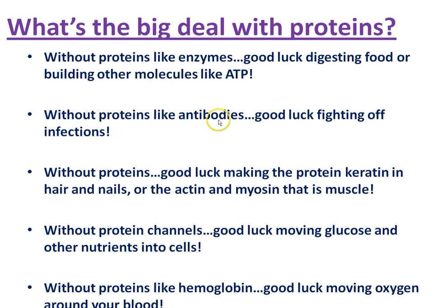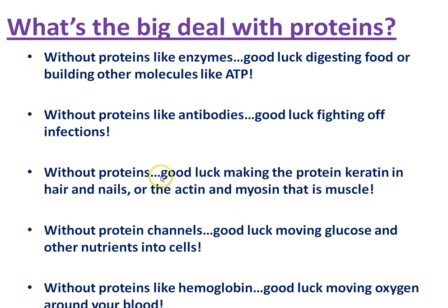Without proteins like antibodies, you're not going to be able to clump up those invading bacteria and virus cells effectively, and your immune system would be dramatically compromised without defense proteins. Without proteins, you wouldn't be able to make much of the structural materials within and outside your cells. For example, proteins called keratin make up your hair and nails, and the actin-myosin proteins that make muscles slide past each other also wouldn't exist without transcription and translation.